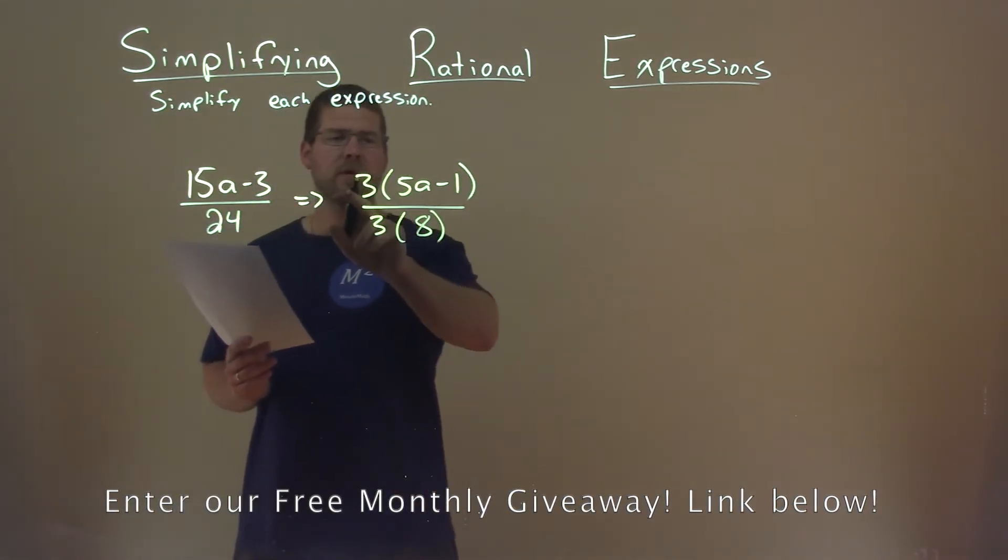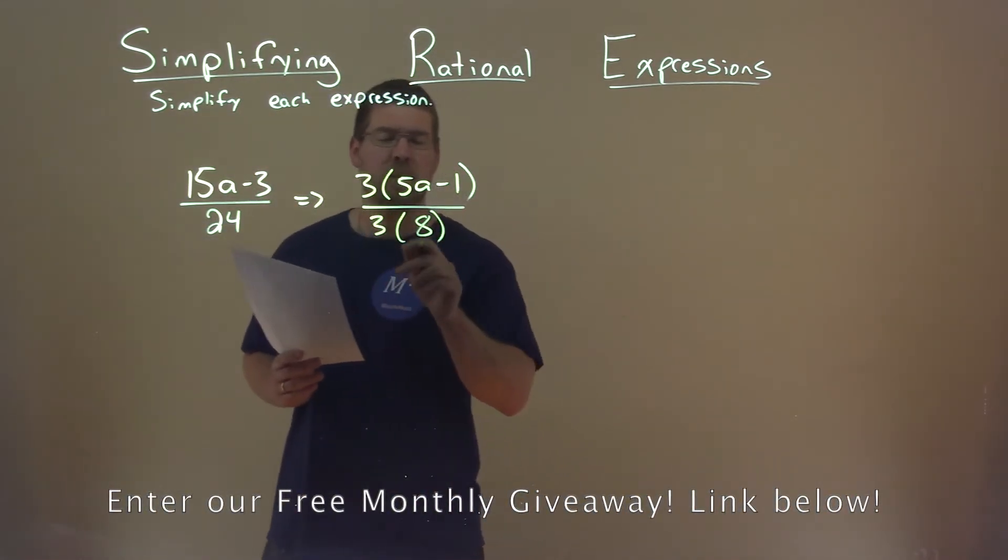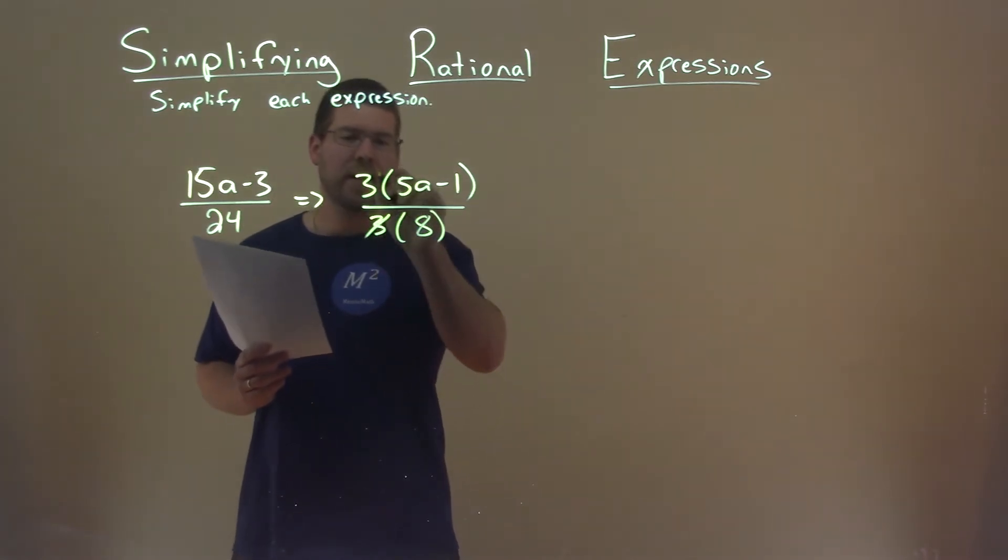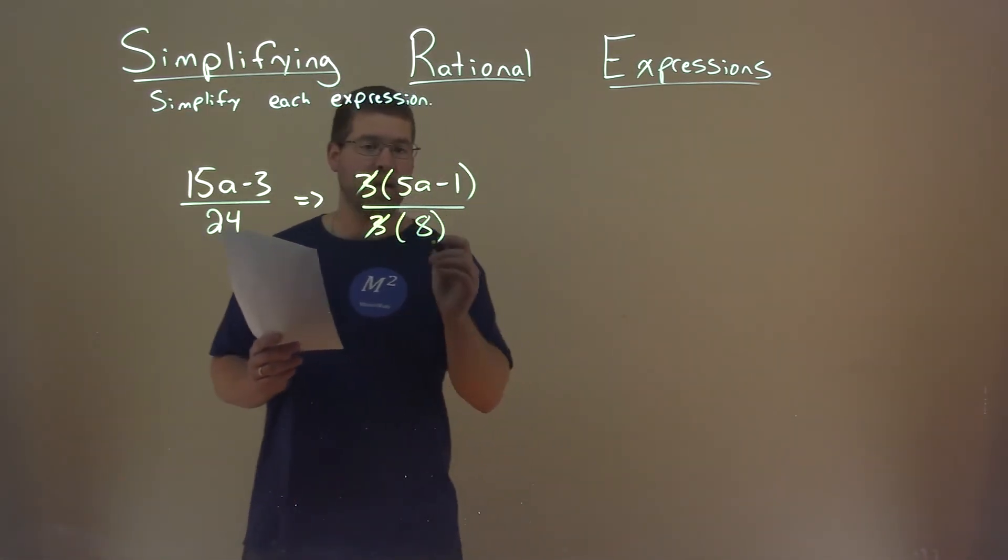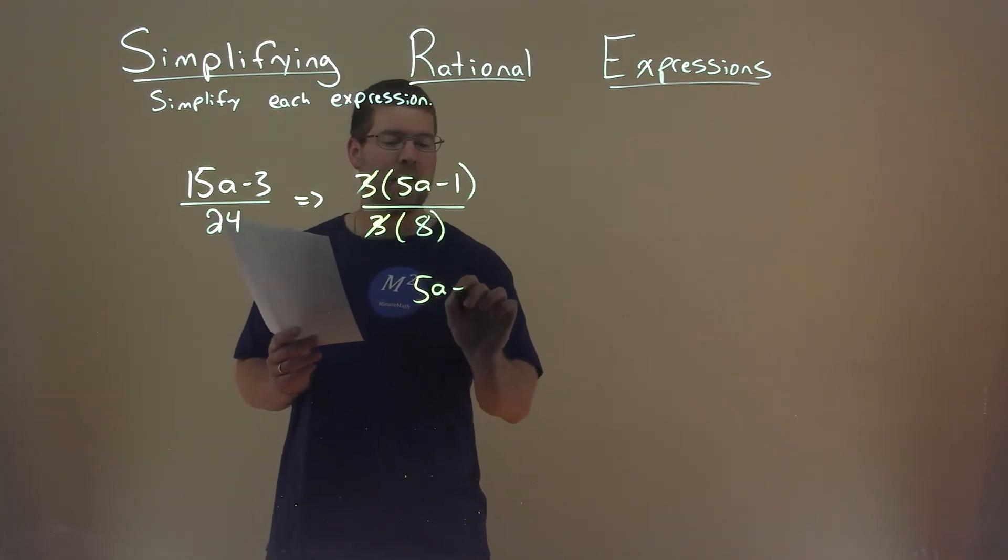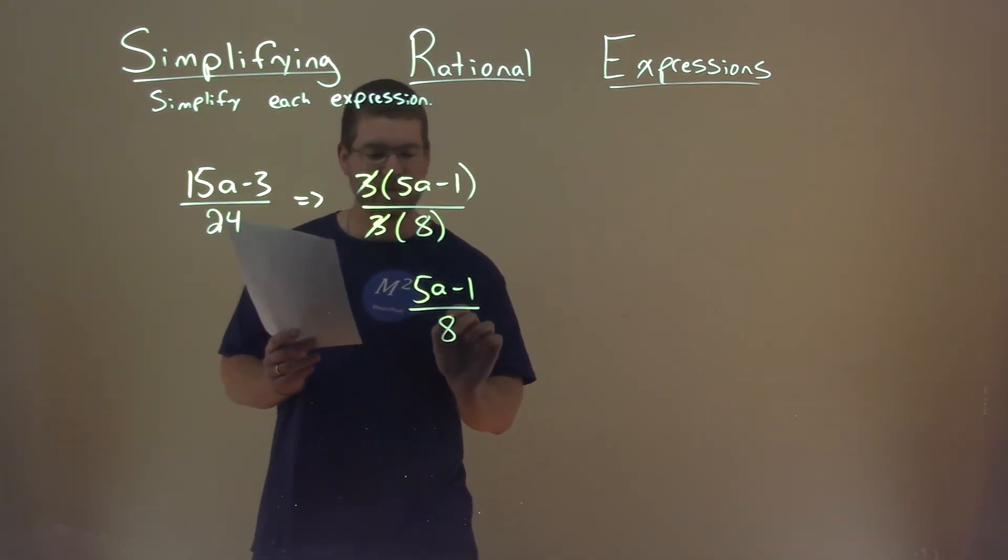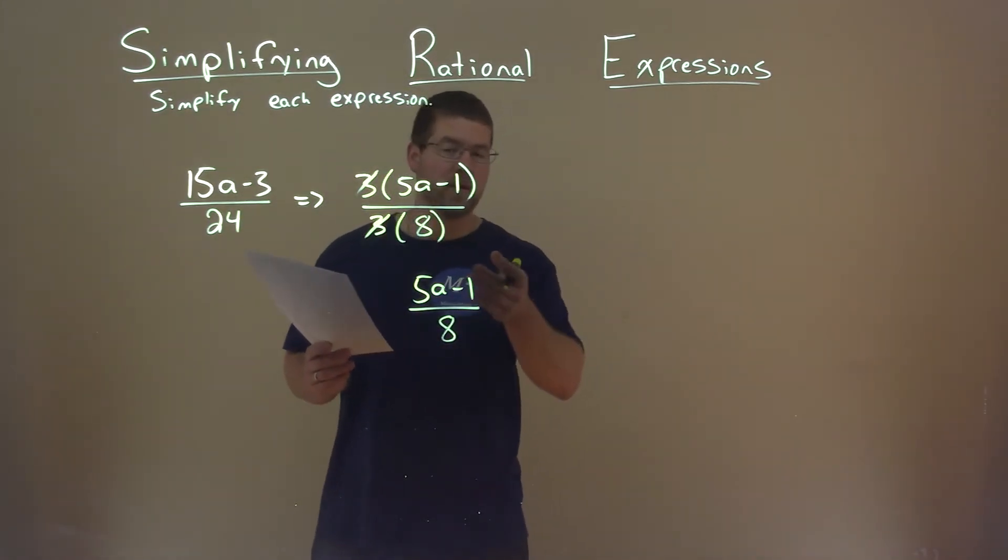So now we have 3 times (5a minus 1) over 3 times 8. Hopefully you can see we can cancel these 3's out, leaving us with just 5a minus 1 over 8, and that is our final answer.